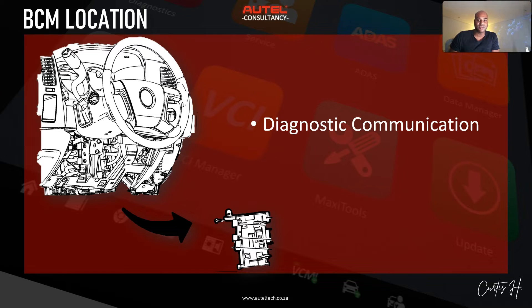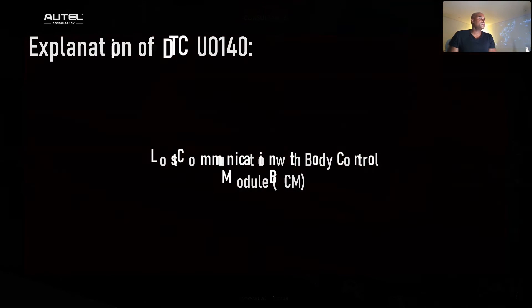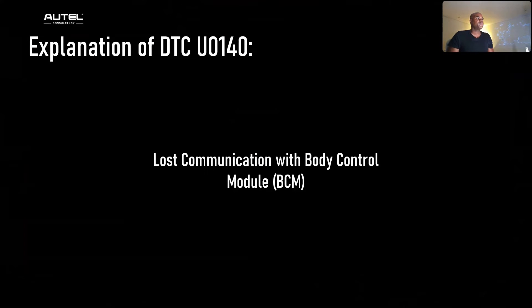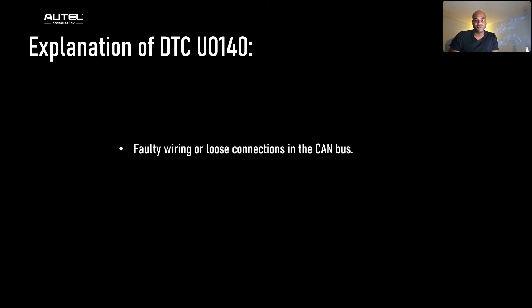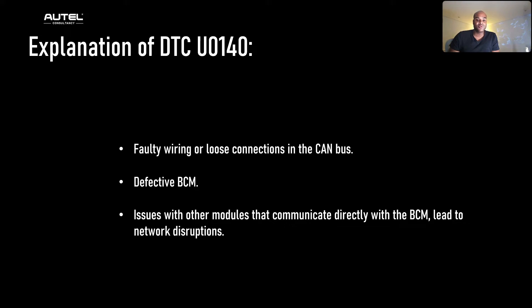The error code U0140 stands for 'Lost Communications with Body Control Module.' This code is triggered when the engine control module or another control module doesn't receive an expected message from the BCM over the CAN bus network within a specified time frame. Some possible reasons include faulty wiring or loose connections in the CAN bus system, a defective BCM, or issues with other modules that communicate directly with the BCM, which could lead to network disruptions.